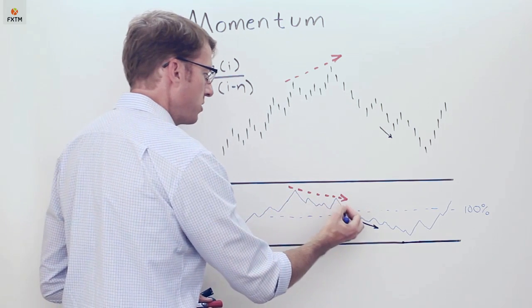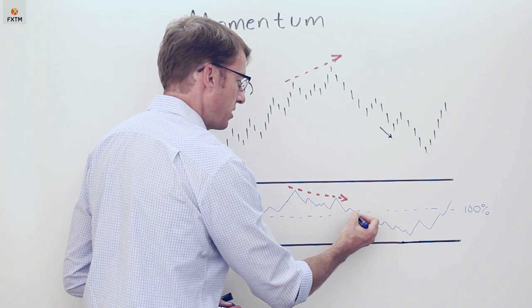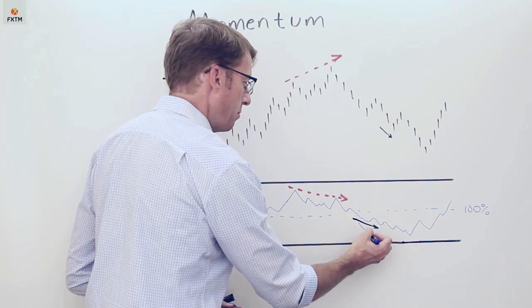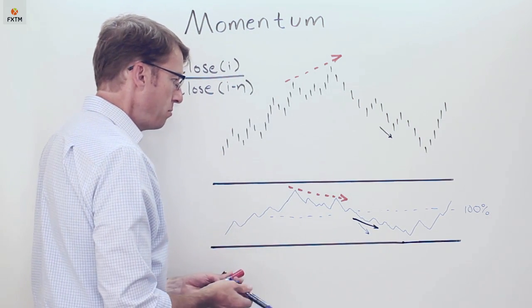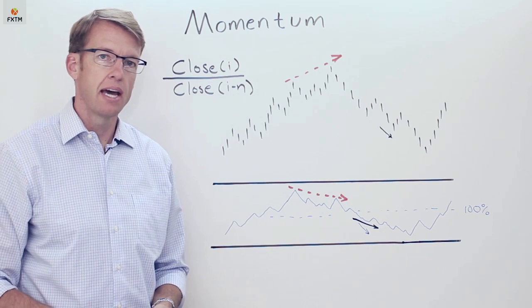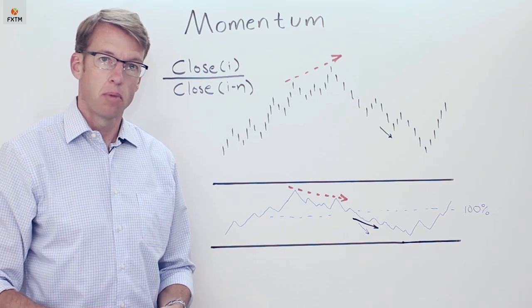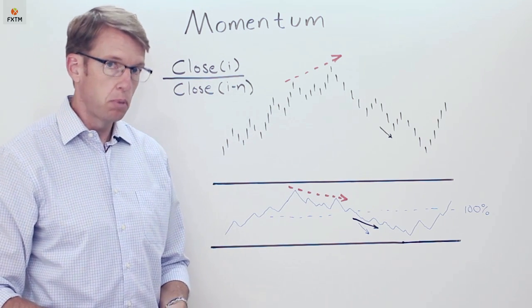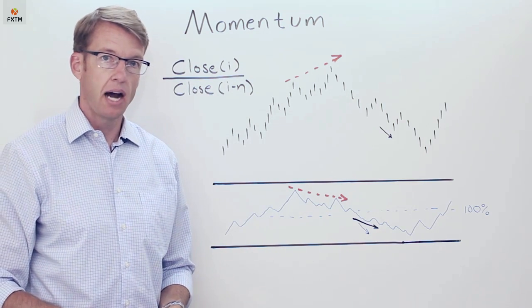So as the price diverges and then the momentum oscillator crosses below that midpoint that tells us something about a trading opportunity to the downside or certainly an indication that the market is losing momentum and bulls should be aware of a relatively high risk environment.